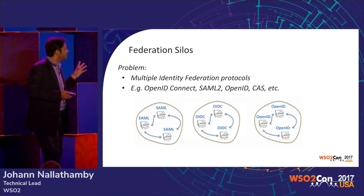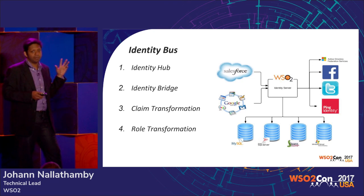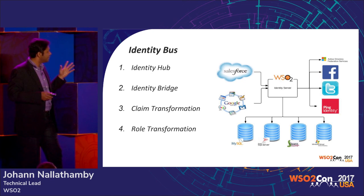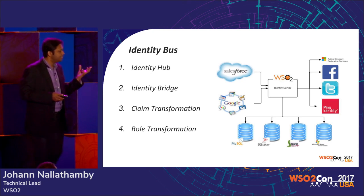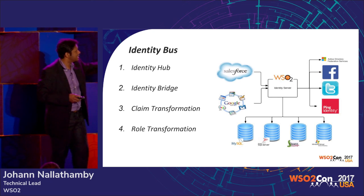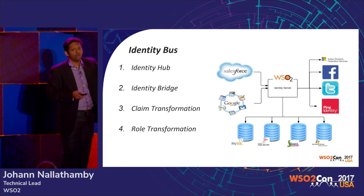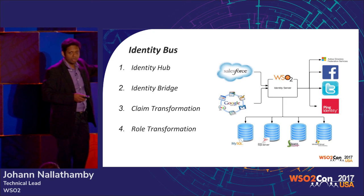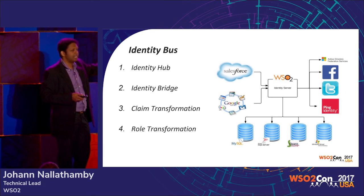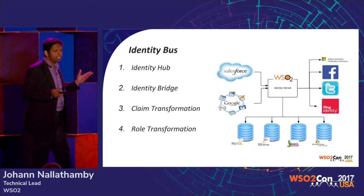The identity bus solves federation silos. Introduced in Identity Server 5.0, its key benefit is functioning as an identity hub — sitting centrally connecting service providers and identity providers. Service providers don't know about identity providers and vice versa; it's easy to add or remove links. It's a hub-and-spoke model.